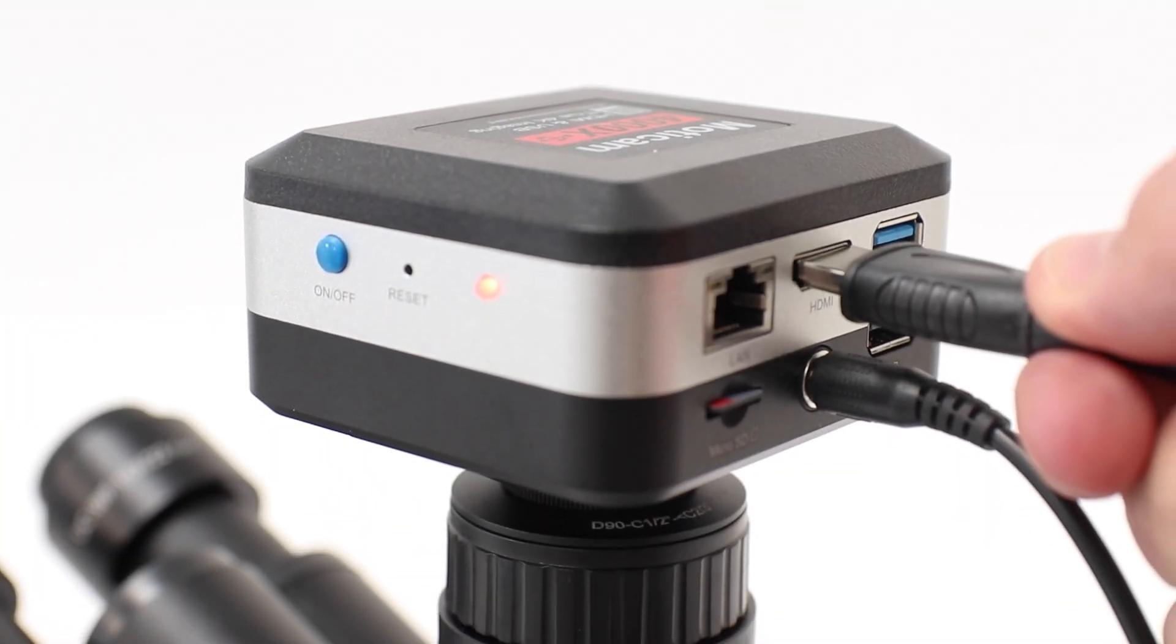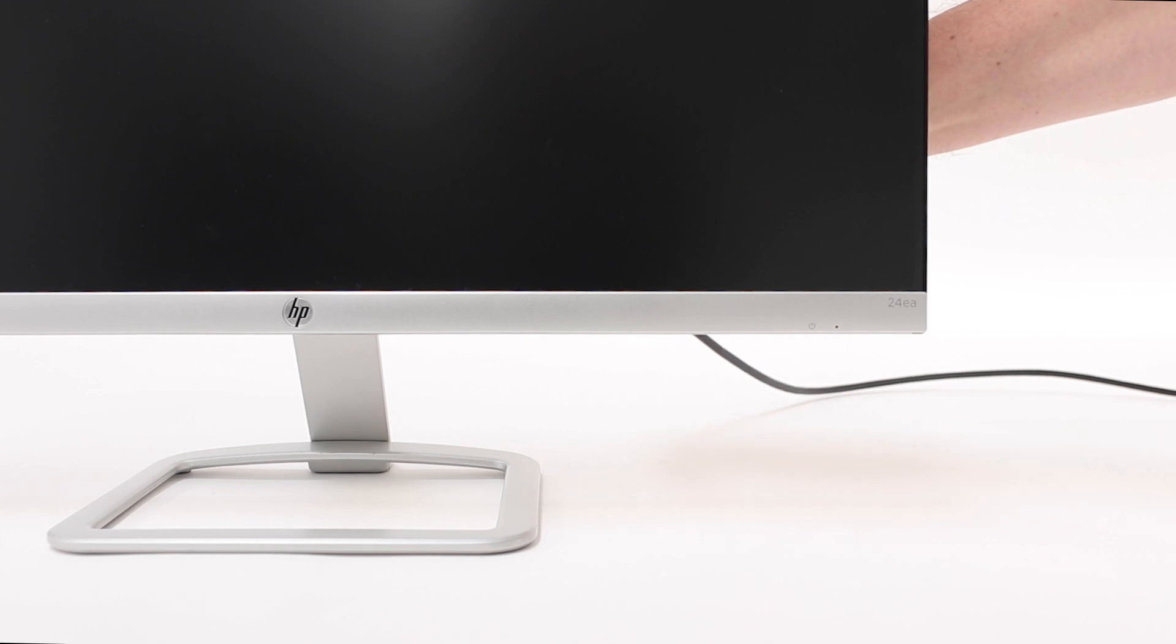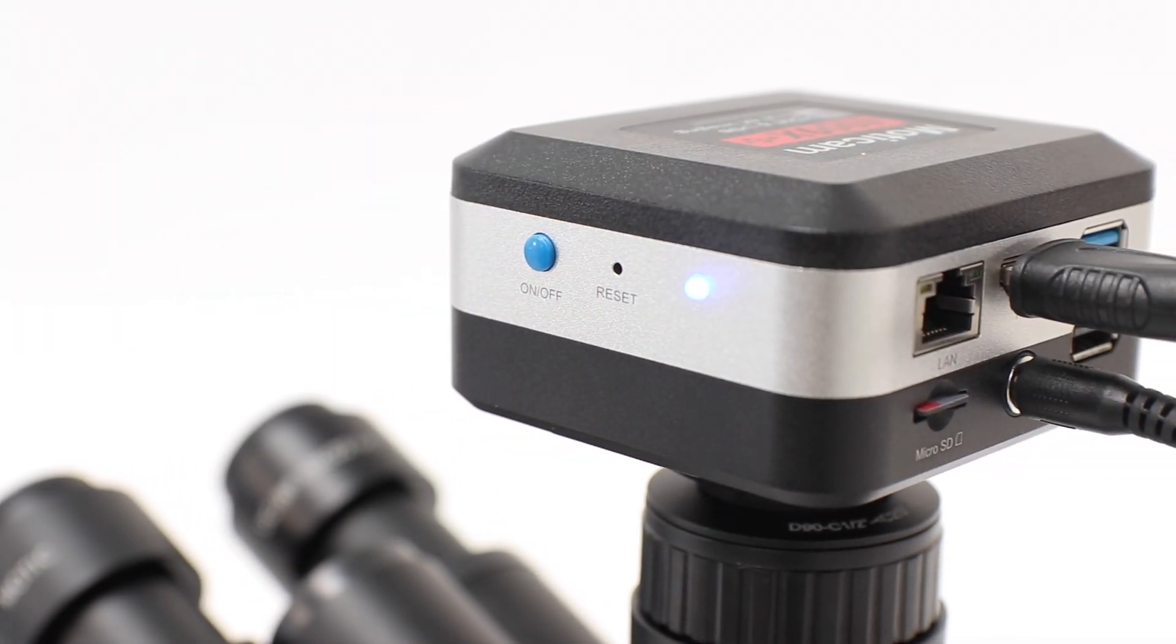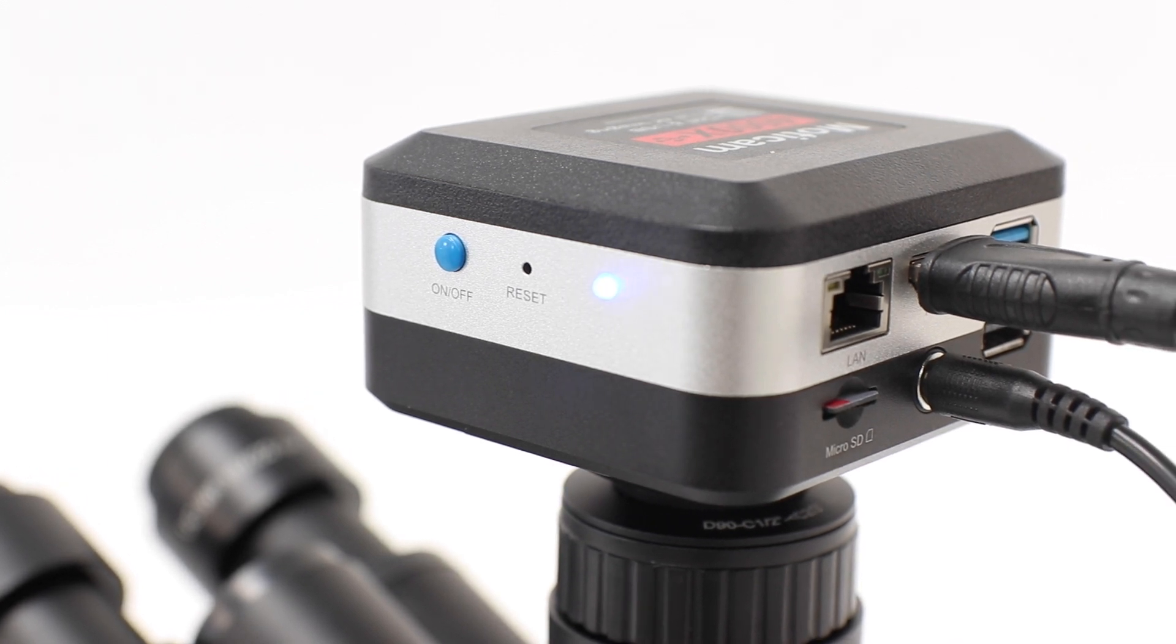Connect the camera to an external device, like a monitor or computer, and power on the camera to view the live image. Keep in mind that connection options may vary depending on your camera model.